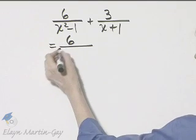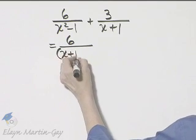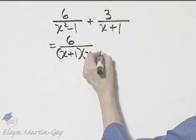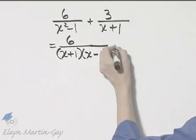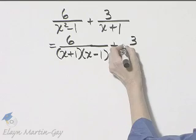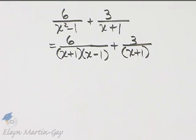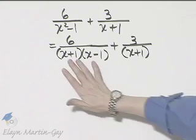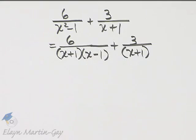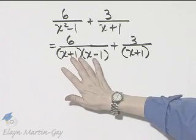This is the difference of two squares, so that's x plus 1 times x minus 1, and then plus 3 over x plus 1. What would be the least common denominator in looking at these two denominators? It would actually be this denominator.